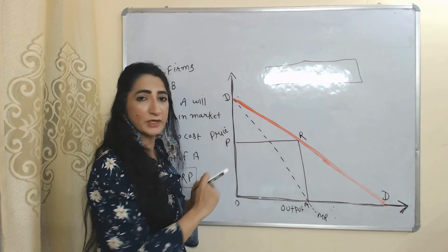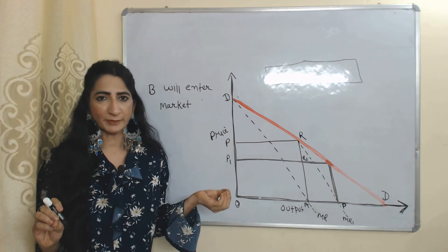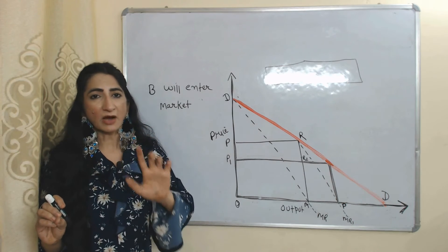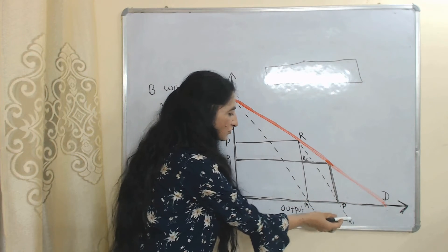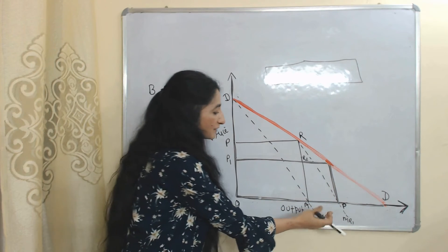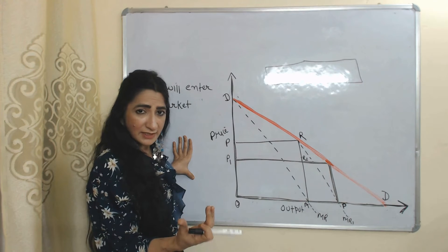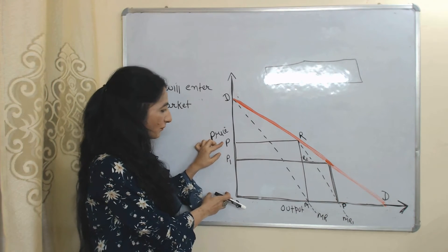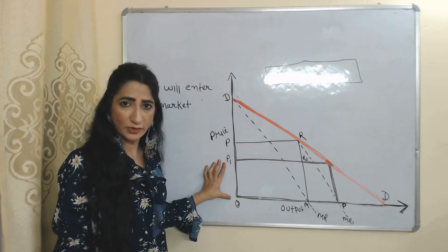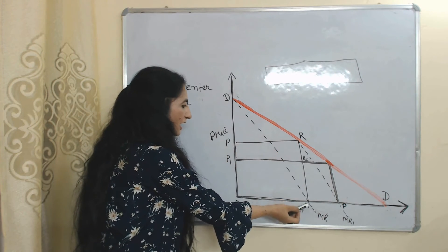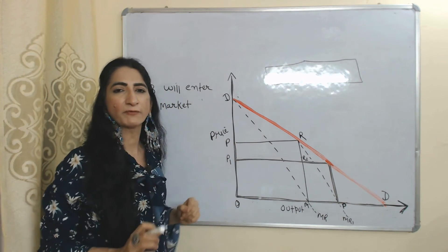This area OPRM is called monopoly profit of firm A. After seeing A's monopoly profit, firm B will enter the market — now two firms are producing, so they have duopoly. The dotted line MR1 shows marginal revenue of B. B's profit maximization output is MP. As B enters, production increases, supply increases, and as a result price falls from OP to OP1. Now both firms are charging OP1, and profit of A is reduced from OPRM to OP1R2M.